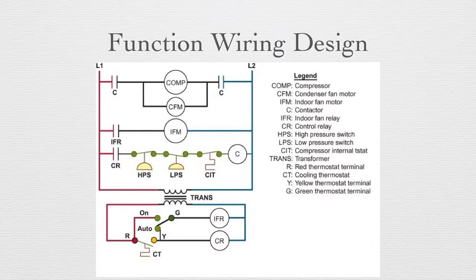In this final schematic diagram, this is a functional wiring design that you would find on a package unit. This schematic does not have a heating circuit. Notice the legend on the right side of the diagram. The purpose of the legend is to identify the symbols used within the diagram. It is an aid to a technician in tracing through the diagram. Starting from the top of the diagram, you have a compressor, condenser fan, indoor fan, contactor coil circuit, transformer, thermostat, indoor fan relay coil, and a control relay coil. The section above the transformer winding is the high voltage section, and the section below the transformer is the low voltage section. The low voltage section is called the control voltage, or 24 volt section.